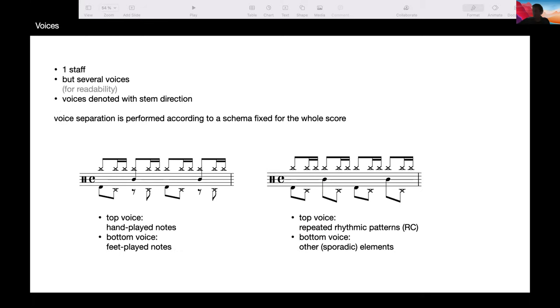Last but not least, the drums is denoted on only one staff. But for readability, you can have several voices denoted with the direction of the stems, like here. And what's important is that the division into voice is fixed once for all for a whole score or a whole book.